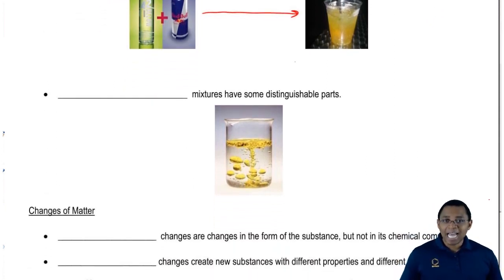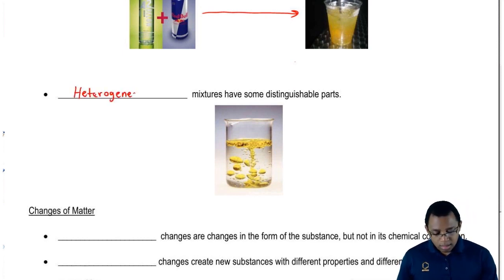The next type of mixture does have distinguishable parts. We've all heard this before. Oil and water don't mix. That's because they form a heterogeneous mixture. I can tell just from looking which part is water, which part is oil. This is basically a non-uniform mixture.